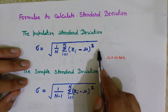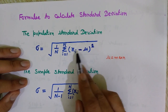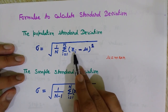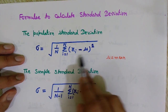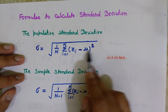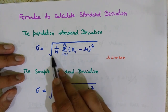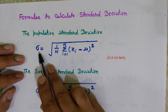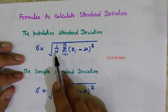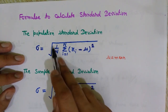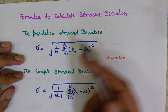So x1 minus mu squared, plus x2 minus mu squared, plus x3 minus mu squared, and so on — we are subtracting the mean from each number, squaring it, and then adding them all. After squaring and adding, we divide by n, the number of values in the set, and then take the square root to get sigma, the standard deviation. If we want variance, we simply do not take the square root — that value without the square root is the variance itself.